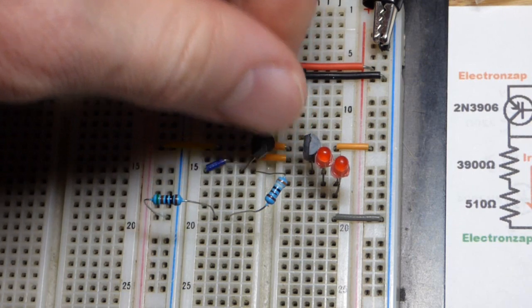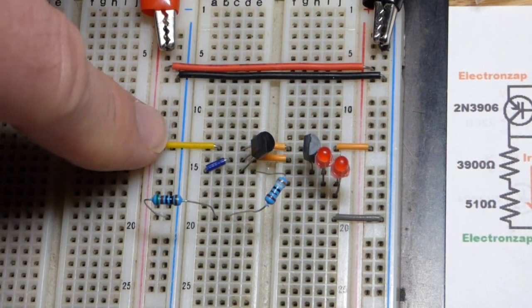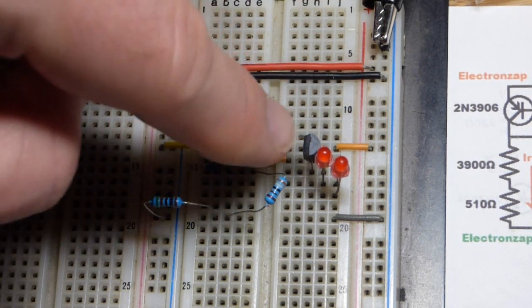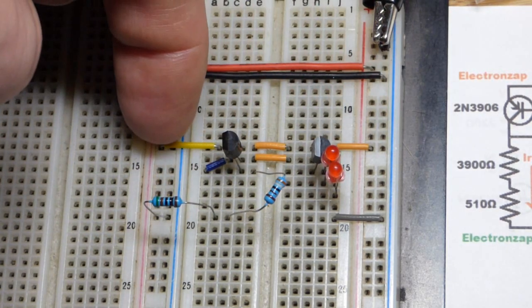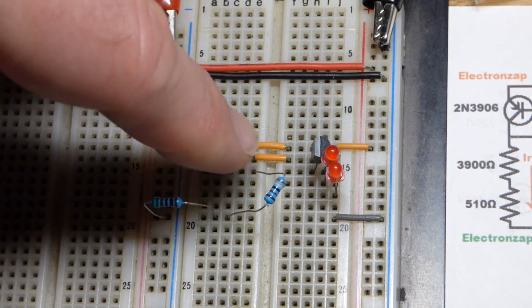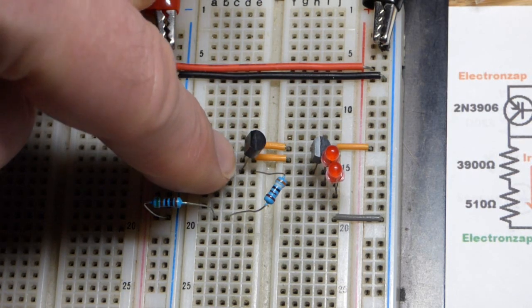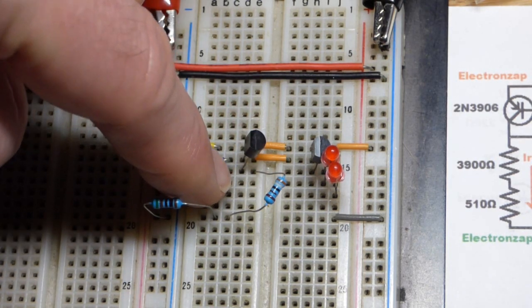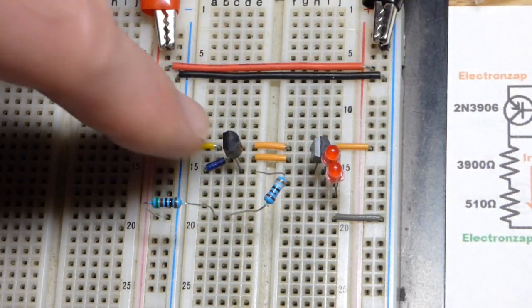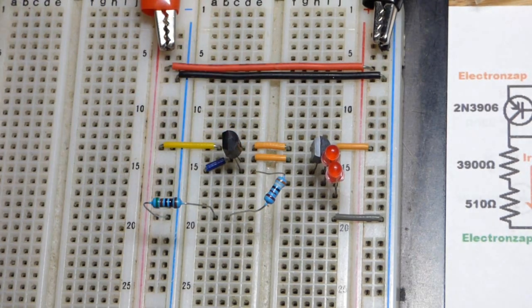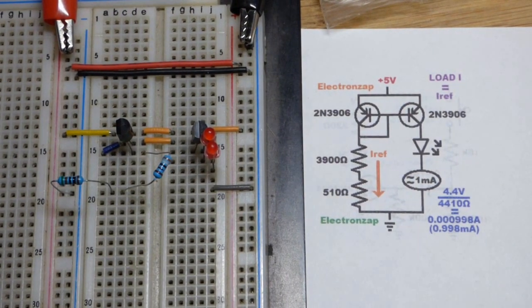This is an older breadboard though - with a new breadboard you might not have that problem. There you can see emitter, base, collector with both transistors the same. We tied the base together, we tied their emitters together, but this one has its base and collector tied together. If we had more transistors, none of their base to collectors would be tied together - the one that sets the current has them tied together.